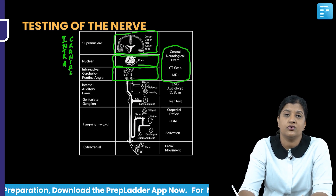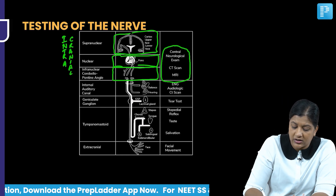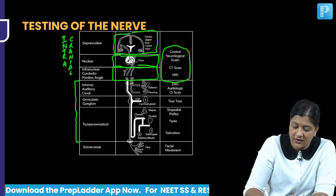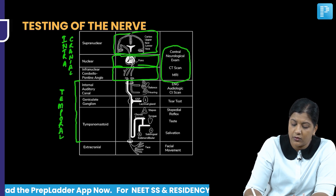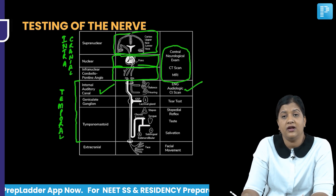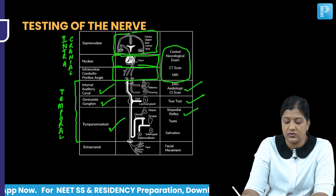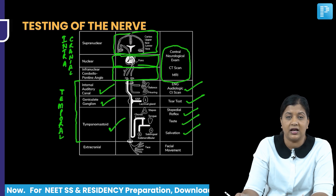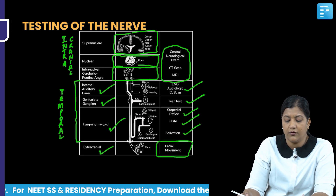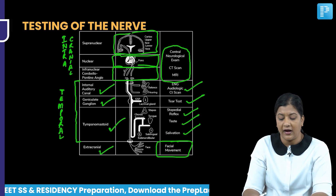For a lesion in the intratemporal course of the facial nerve, including the internal auditory meatus, you can do electroneuronography and audiological testing. A CT scan at the level of the geniculate ganglion allows tear testing. At the tympanomastoid suture you can test stapedial reflex, salivation, and extracranially you can assess facial movement.